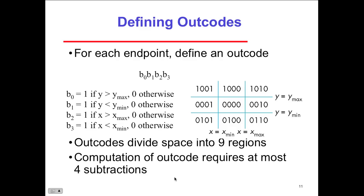For each endpoint, we define an out code. The out code divides the space into nine regions. Computing the out code requires at least four subtractions. You don't need to know the calculations for this course — it's just vocabulary you'll need. The out code essentially identifies which region is not visible.